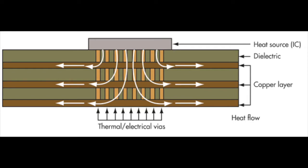There are two basic ways to utilize copper planes in thermal management: utilizing the existing power and ground planes, or passive thermal management, and using an internal copper core, or active thermal management. This discussion will focus on the passive power and ground technique, as internal metal cores will be discussed in another session.